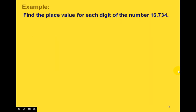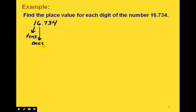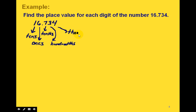For an example, let's find the place value for each digit of the number 16.734. We already know the place values for the 1 and the 6 — the 1 is in the tens place. When we go to the right of the decimal point, the first place is the tenths place where the 7 is, the next place where the 3 is would be the hundredths place, and the 4 would be in the thousandths place.